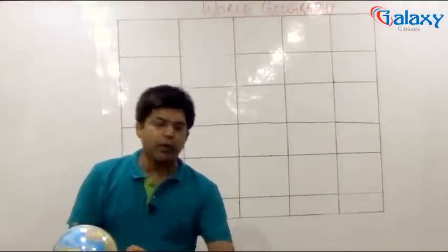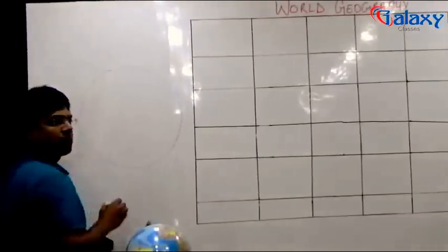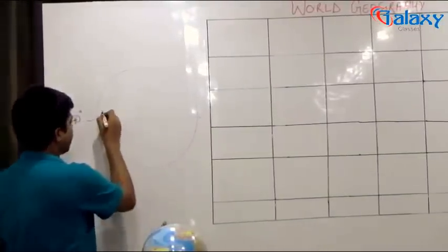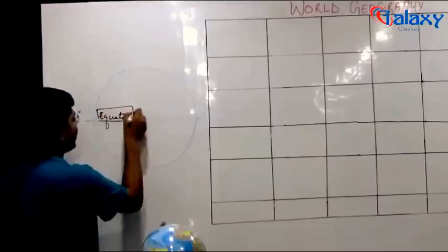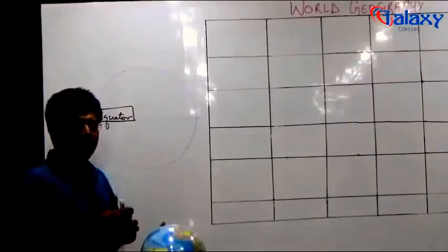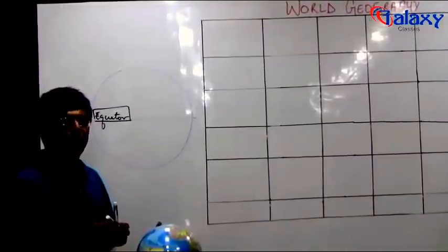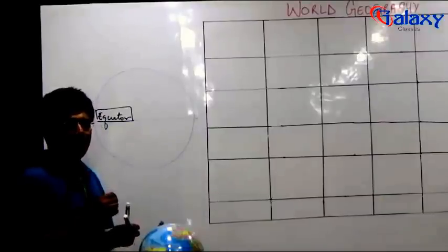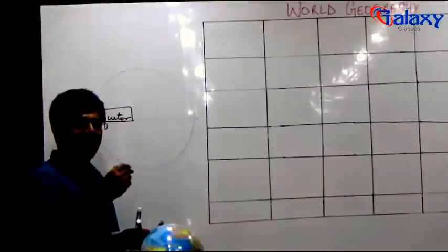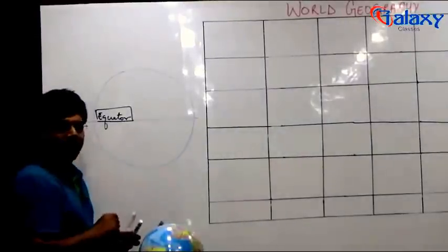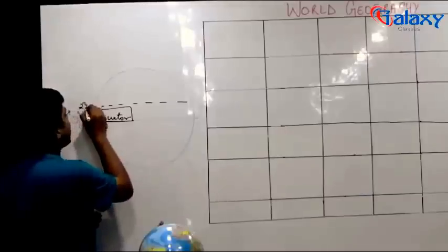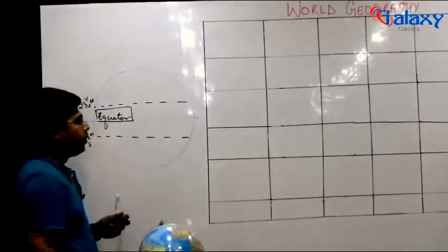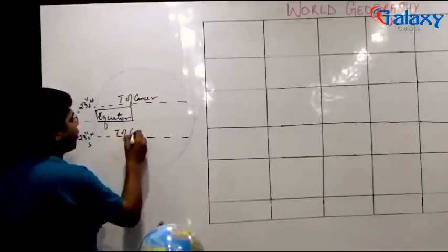We all know that earth is spherical in shape and there is a line passing in between at zero degree, which we call the equator. The word equator has been derived from the word 'equal.' It can be called a geographical equator because it divides the earth into two perfect hemispheres — northern and southern. It can also be called a thermal equator because this is the only line which has perfect 12 hours of day and 12 hours of night. At 23 and a half degrees north is the Tropic of Cancer, and 23 and a half degrees south is the Tropic of Capricorn.